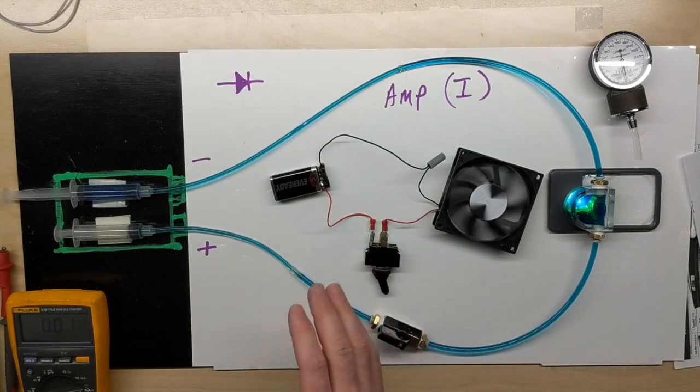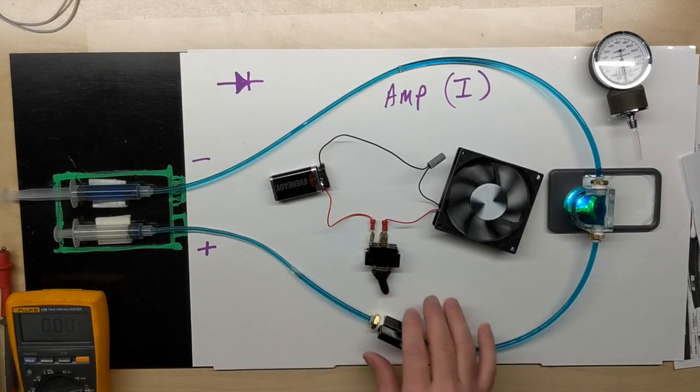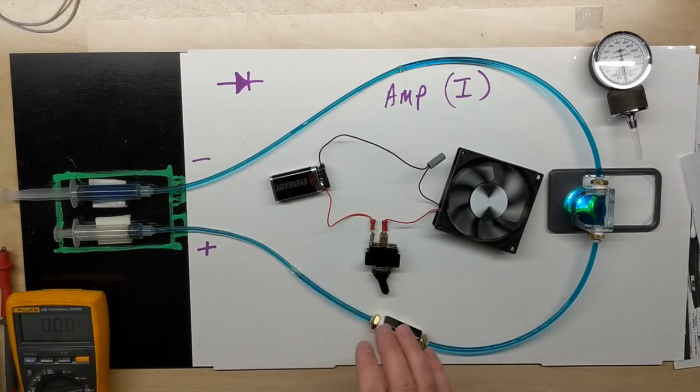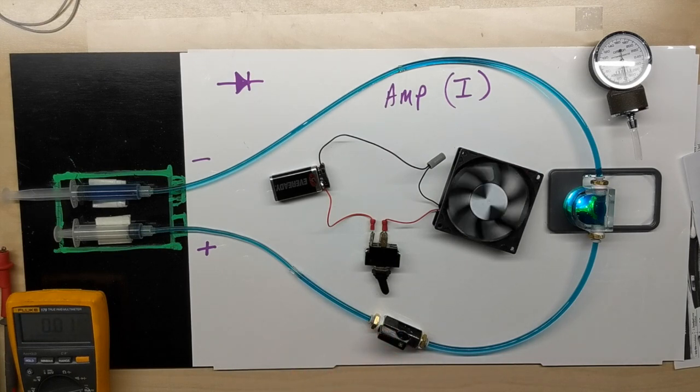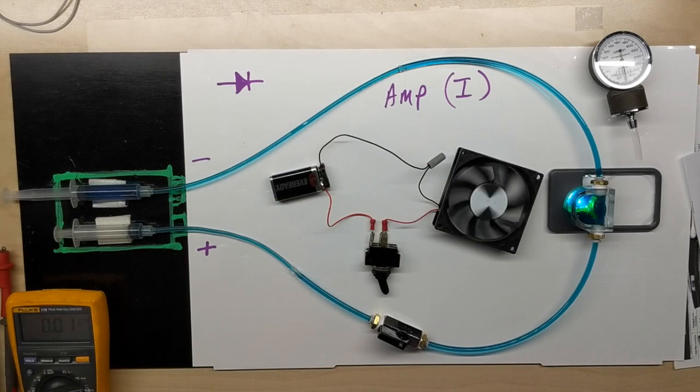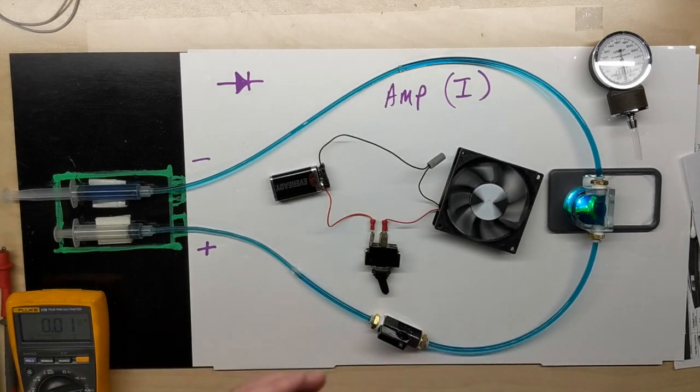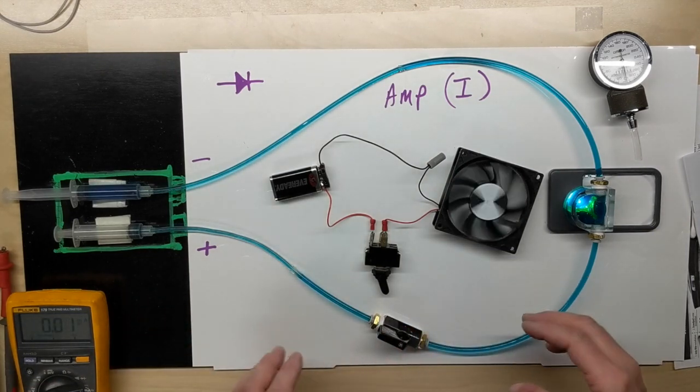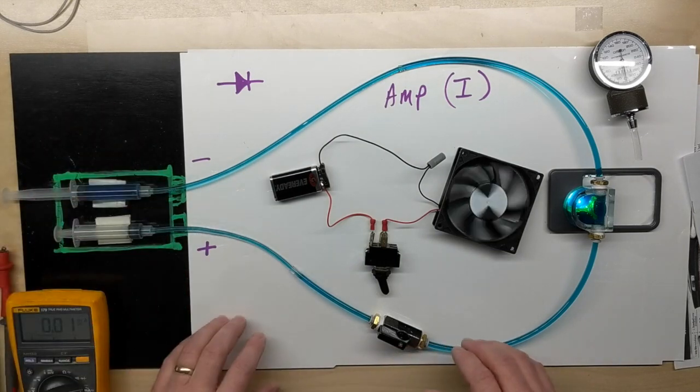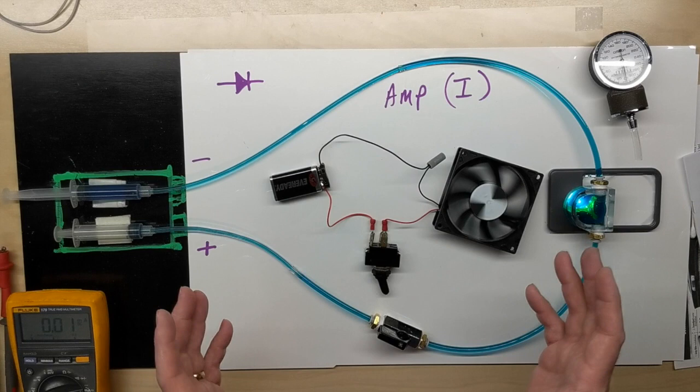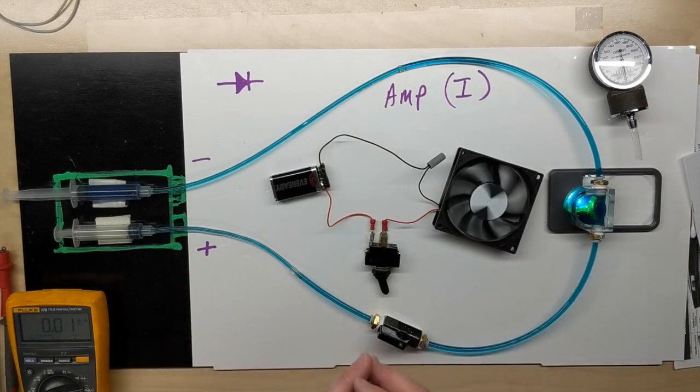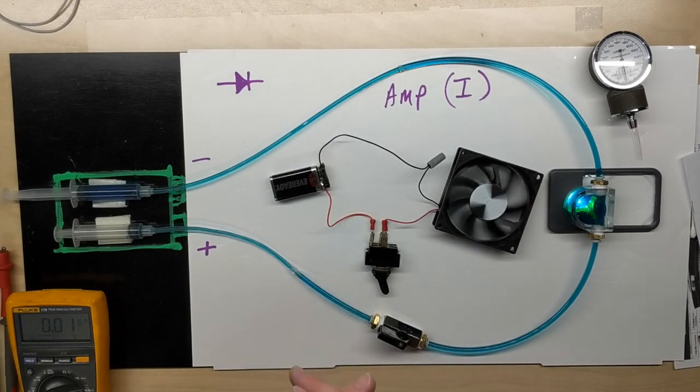So what's some things that don't allow current flow? Typically, we call those insulators. And an insulator is just a material that does not allow the flow of electric current freely. And examples of that is glass, plastics. So this right here is a good example. To some point, air until it ionizes. And even dry wood can be an insulator, but it's not a very good one due to humidity and dampness.